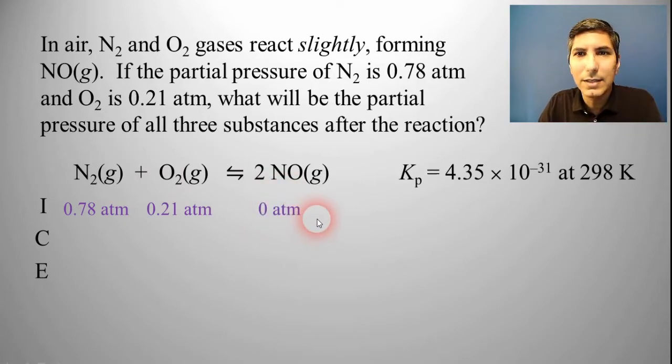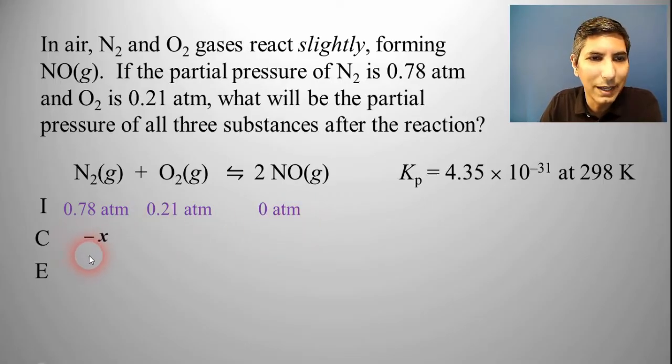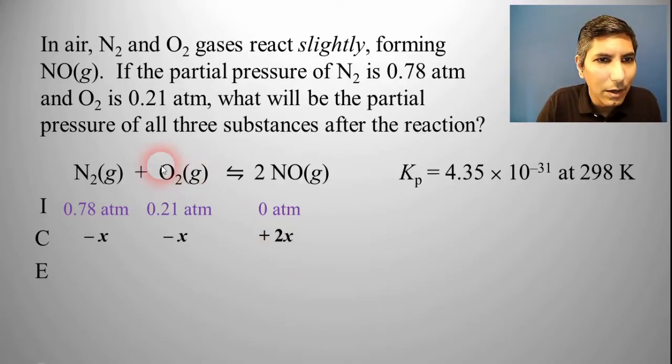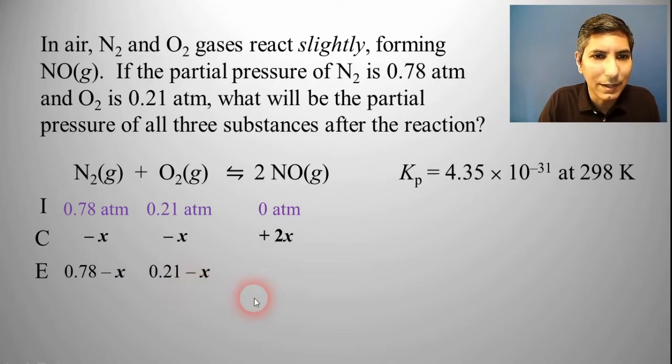It doesn't give us any other information, so that means that our change is going to be minus X, minus X, and the NO is going to be plus 2X. Because we're on the other side of the arrow, it's got to go up instead of going down, and there's that 1 to 2 ratio, so that's why it's 2X. Our equilibrium values are going to be 0.78 minus X, 0.21 minus X, and 2X.